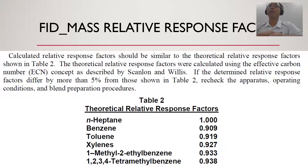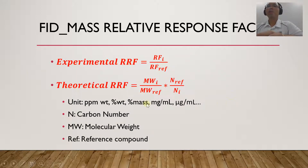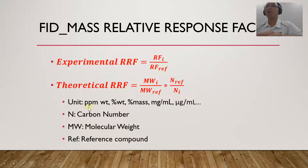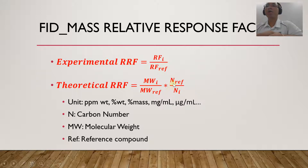Just to let you know: for this formula to work, the concentration you use must be on a mass or weight basis. The units would typically be ppm weight, weight percent, mass percent, milligram per mL, or something like that. It has to be on a weight or mass basis for this formula to be valid. In the formula, N stands for carbon number, MW is molecular weight, and ref is the reference compound.